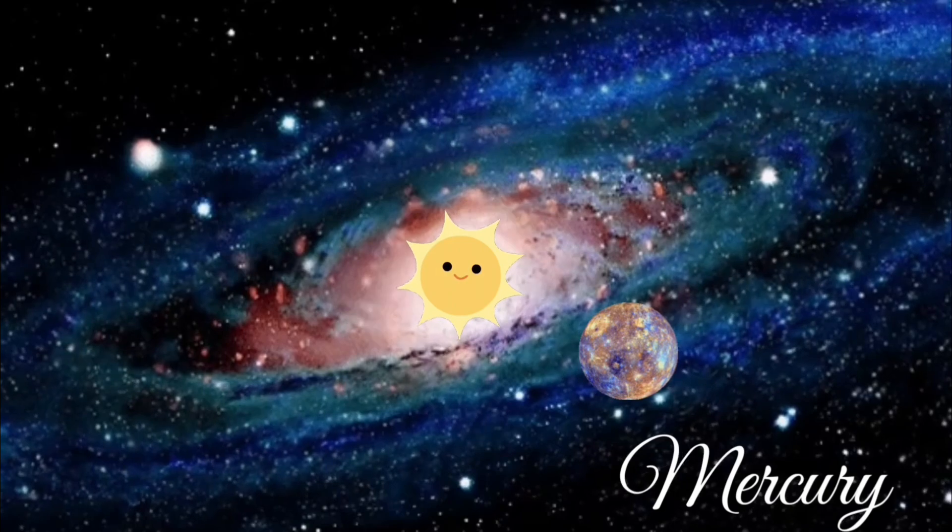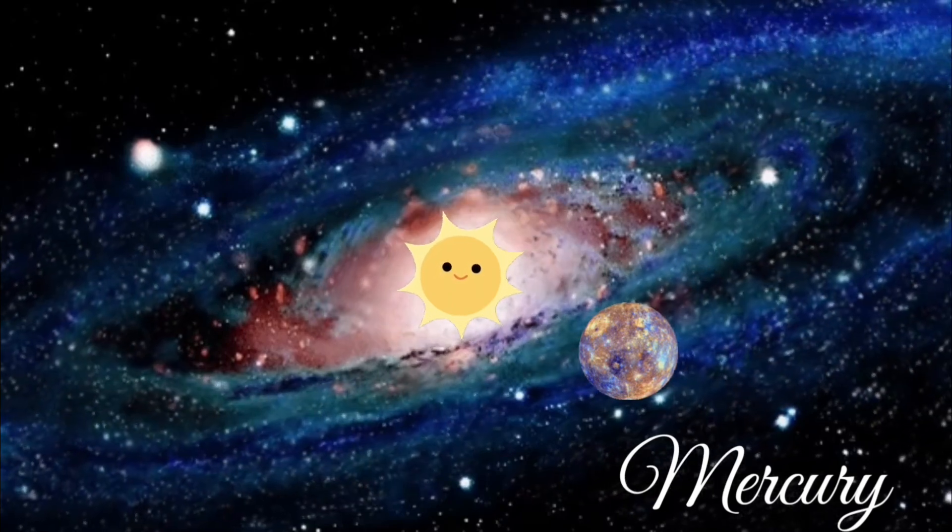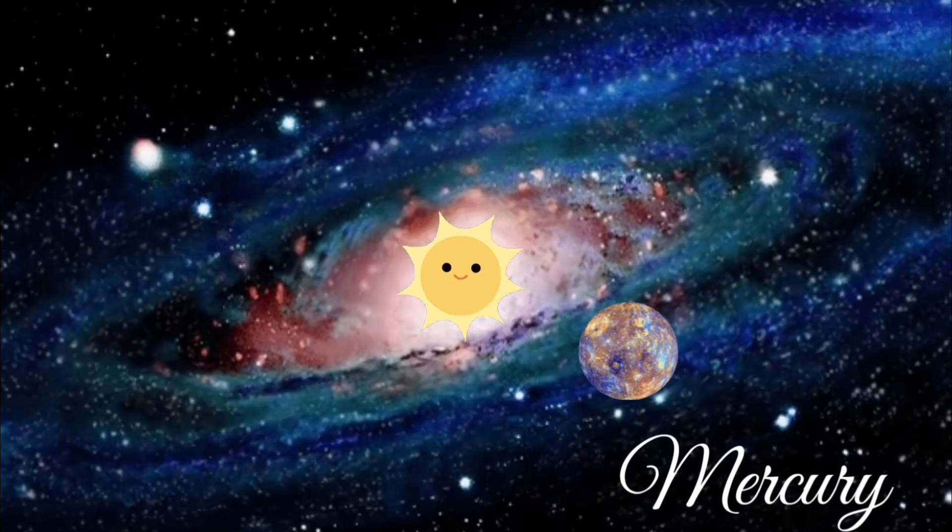Mercury is the closest planet to the Sun, and it's super hot during the day and very cold at night because it doesn't have much air to keep in the heat.